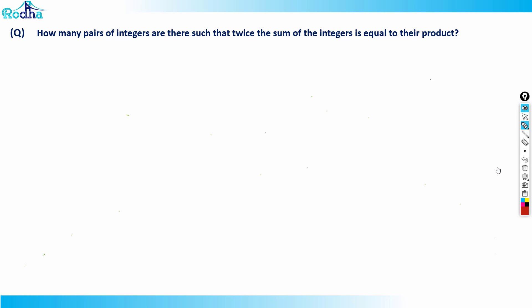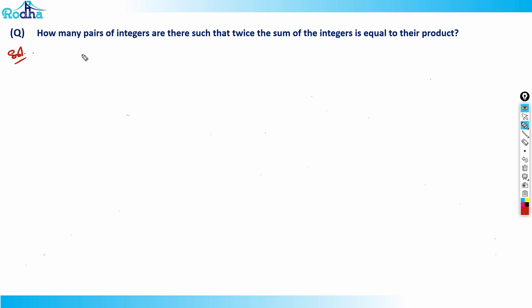Hi guys, let's look at this question — it's a very good concept. We'll be seeing two methods to solve this question, and both methods are important, so you should learn both. The question says: how many pairs of integers are there such that twice the sum of the integers is equal to their product?